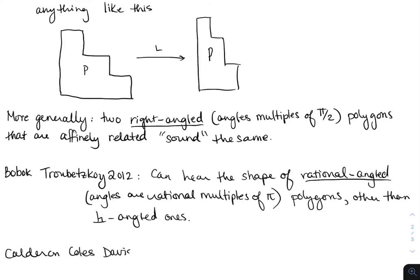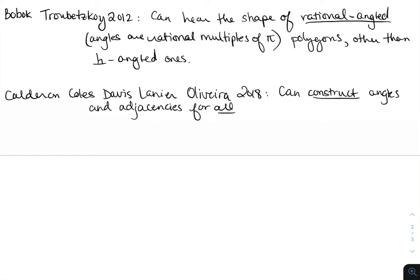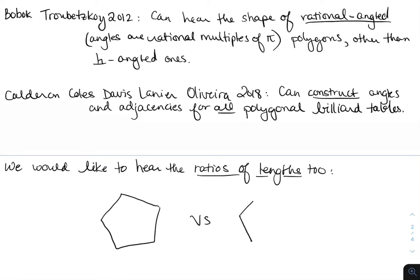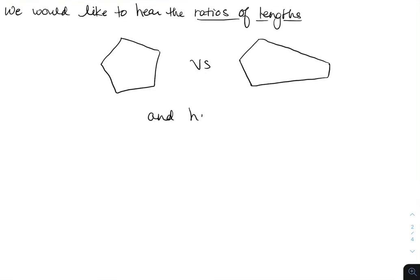And then Calderon, Coles, Davis, Lanier, and Oliveira in 2018, who were working at the same time as us, showed that from the bounce spectrum you can construct the angles and also figure out which edges are adjacent — and this is for all polygons, not just rational angled, but all polygonal billiard tables. So what we wanted to do is also hear the ratios of the lengths. All the angles might be the same but the lengths might be different, and we would like to hear that difference. We would also like to handle irrational multiples of pi.